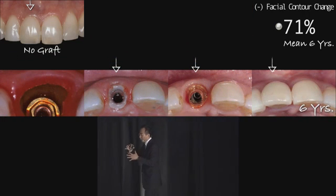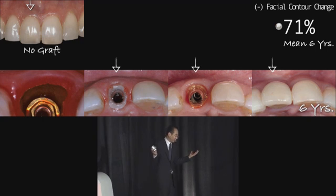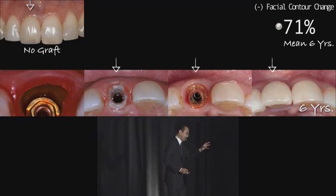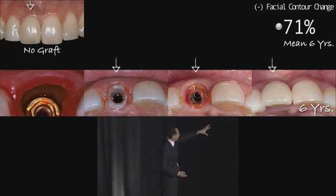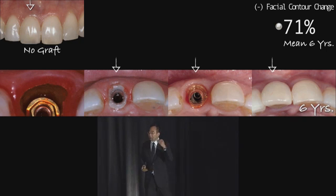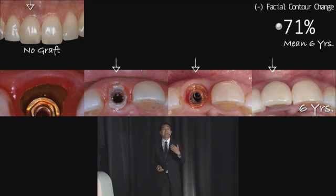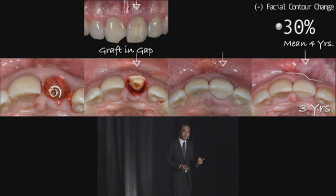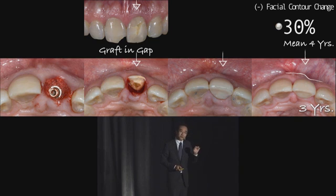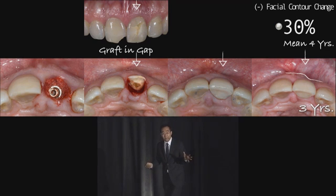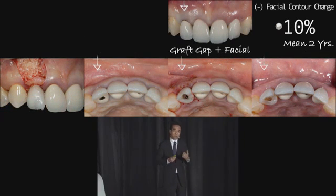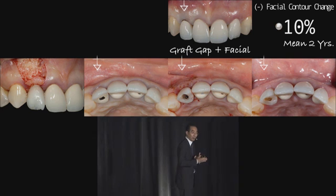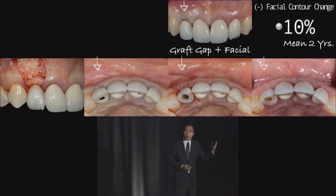The office recalled all patients who had implants placed over the last 15 years, immediately, with the different types of gap management. In the first group, without bone graft in the gap, they noticed a negative facial contour over 70% of the time at a mean six-year follow-up. When we put bone graft in the gap, it looks a lot better, but we still see partial collapses depending on bone thickness and bone type. The last group has the shortest follow-up — about two years — but it seems to give the most promising results.